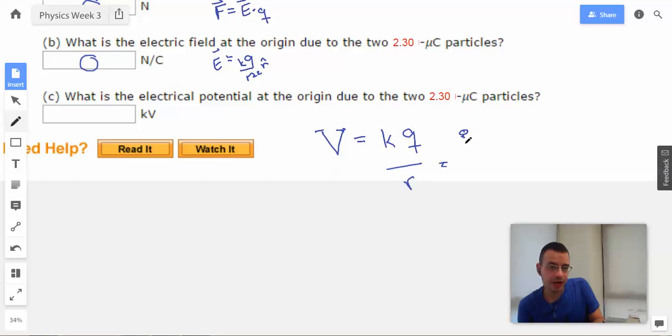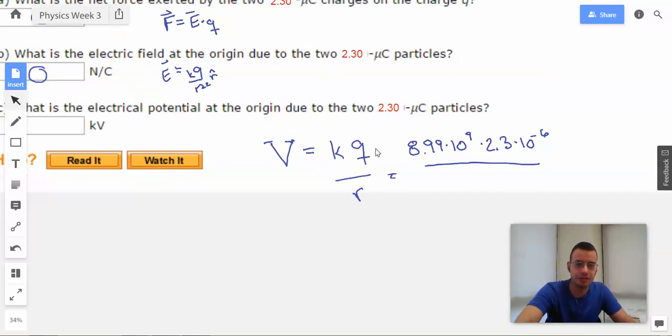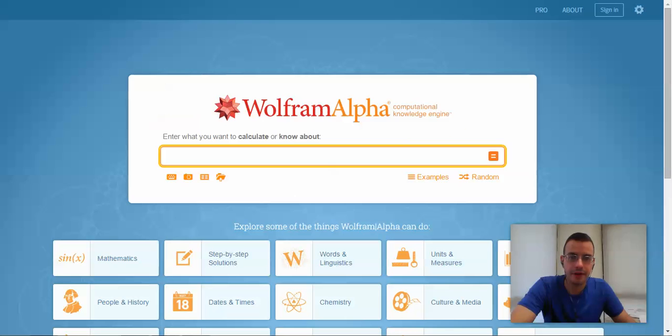K is 8.99 × 10^9, Q is 2.3 × 10^-6, and R is 0.8, which I'll write as 8 × 10^-1. It goes to 10^1 up here. 9 + 1 = 10, 10 - 6 = 4.